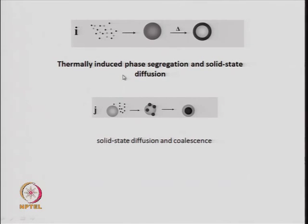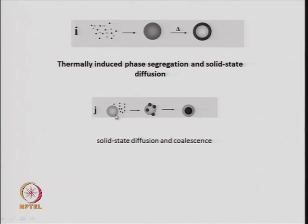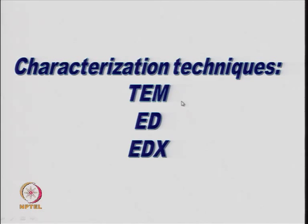Other mechanisms include self-controlled nucleation diffusion and growth, and thermally induced phase segregation with solid-state diffusion: two types of particles form a composite, and on heating the phases segregate — the dark and white components separate to form distinct core and shell entities. Additionally, small particles can adsorb on a core surface, coalesce, and ultimately form a core-shell structure.